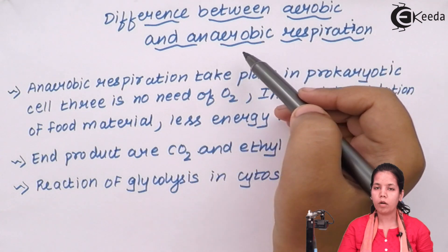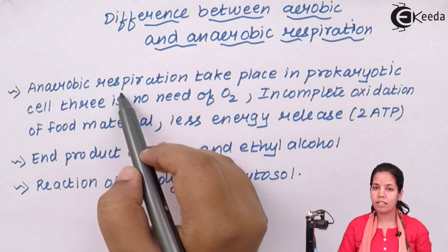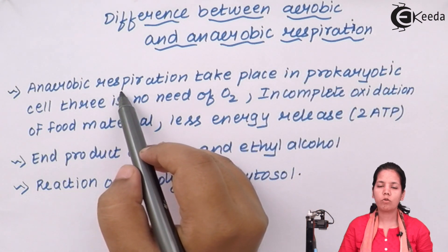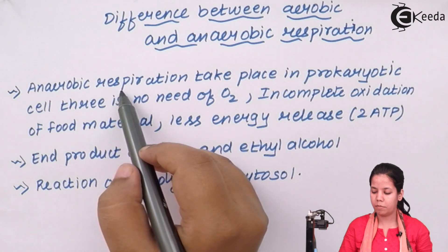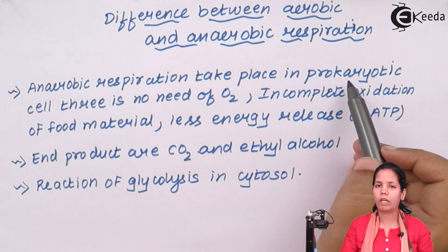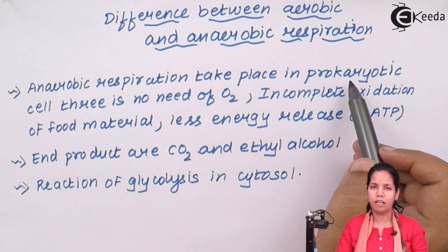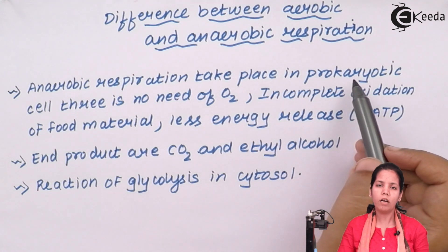When we talk about anaerobic respiration, it is a respiration that takes place in the absence of oxygen. Anaerobic respiration takes place especially more in prokaryotic cells. When I say prokaryotic cell, it could be a bacterial cell or a microbial cell.